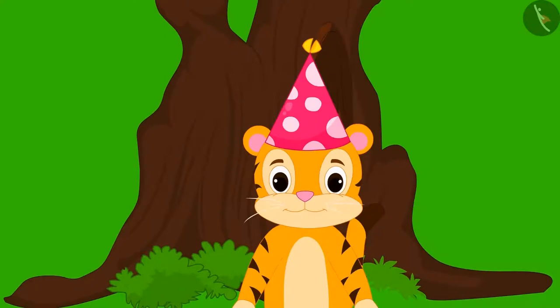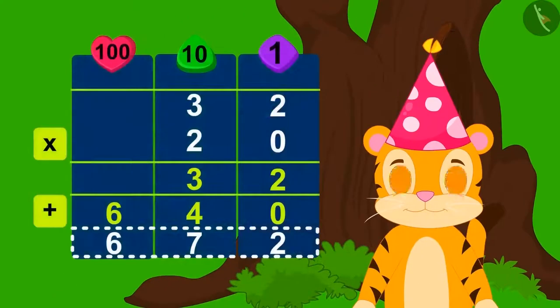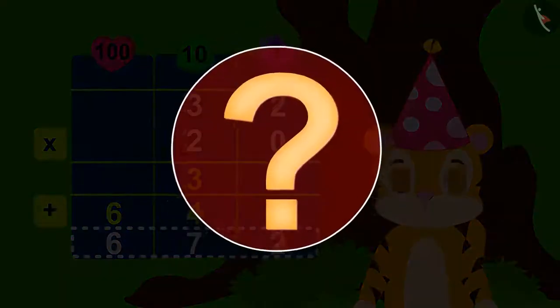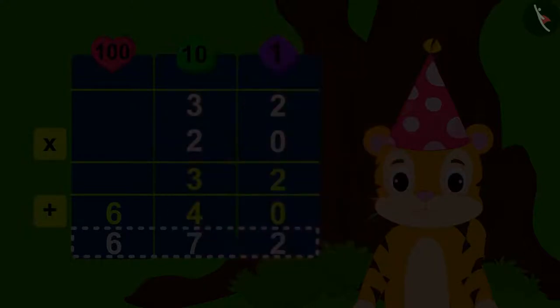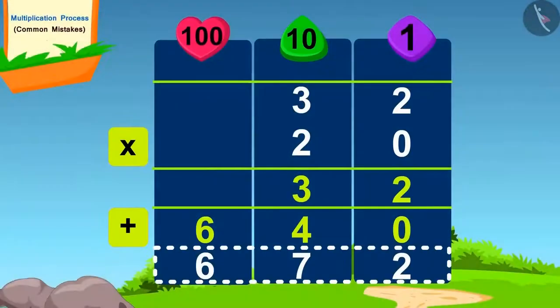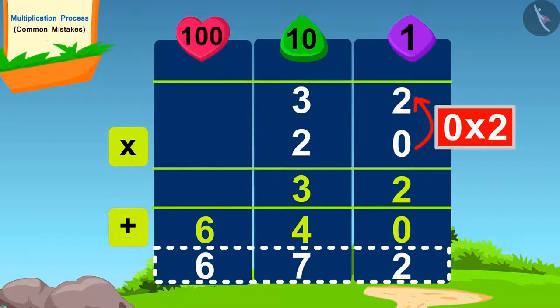Yes, Shere Khan is wrong. He made a mistake while multiplying. Can you tell me what was the mistake Shere Khan made? Shere Khan made a mistake while multiplying by zero. So, how do we find the right answer?